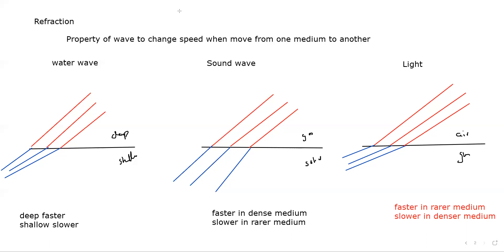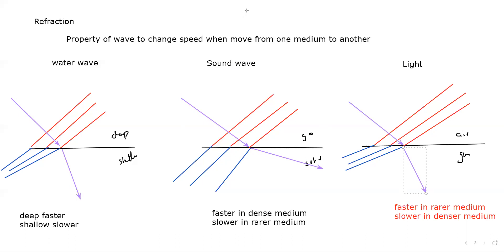The direction of the wave is always 90 degrees to the wave front. For water waves and light traveling into a denser medium, the wave bends towards the normal. For sound waves traveling into a denser medium where speed increases, they bend away from the normal. So the simple idea is: if speed increases, the wave bends away from the normal; if speed decreases, it bends towards the normal.